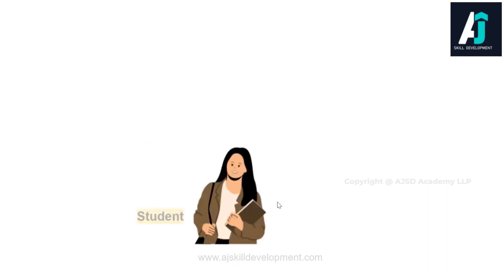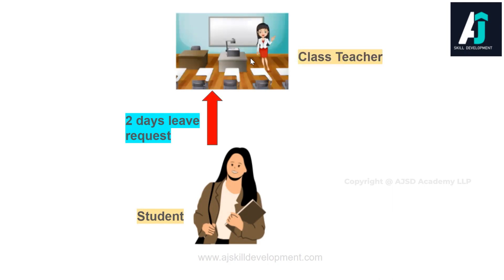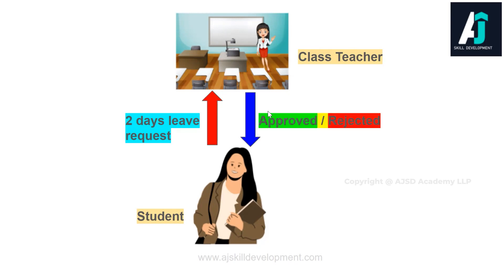Let us take a small day-to-day example to understand the approval process. Imagine there is a college student who is in need of two days leave. She makes a leave request to her immediate class teacher. The class teacher receives the request, analyzes the reason for the leave, and if the reason is reasonable she grants the leave. If it is not reasonable, she rejects the request. So students make leave requests to their class teacher and based on the reason it is approved or rejected.